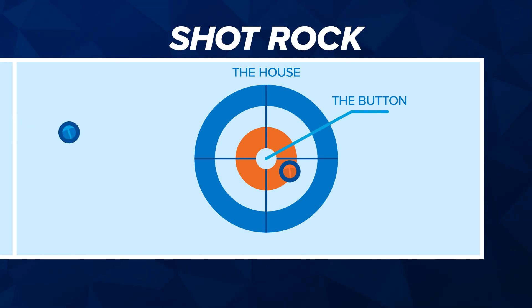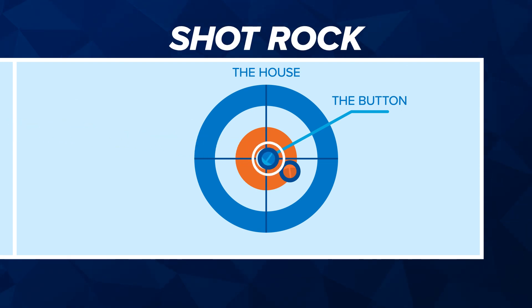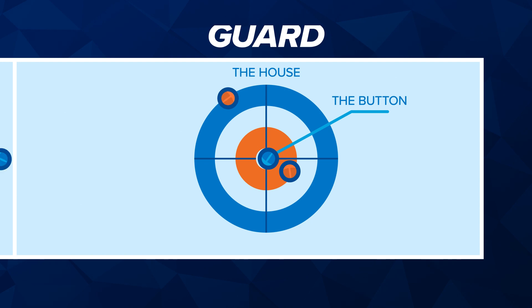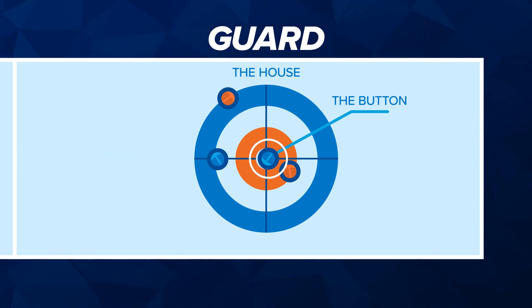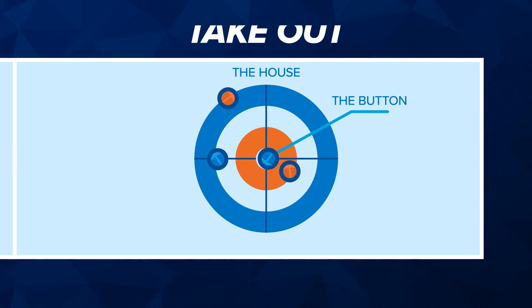Shotrock — the stone that is closest to the button. Guard — a stone that is strategically placed to protect another stone behind it.